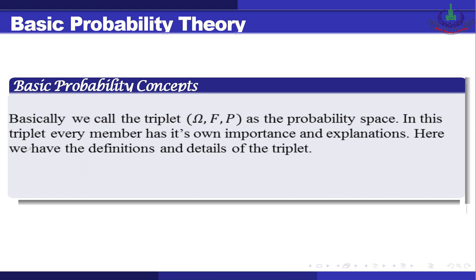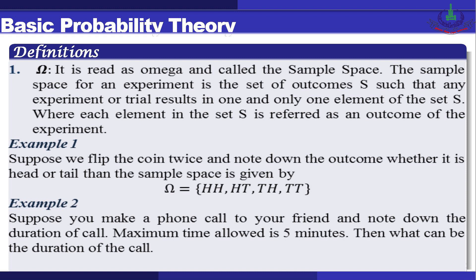We start from the definition of omega, which is called the sample space. The sample space for an experiment is the set of outcomes S such that any experiment or trial results in one and only one element of the set S, where each element in S is referred to as the outcome of the experiment. For example, if we flip a coin twice and note whether it is heads or tails, the sample space omega consists of: head-head, head-tail, tail-head, and tail-tail — so four events.